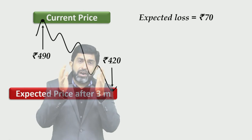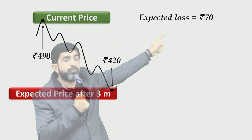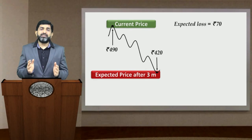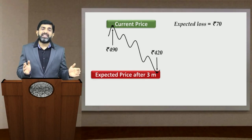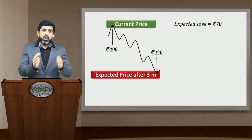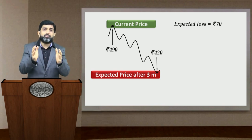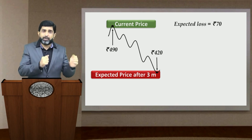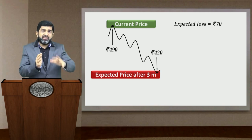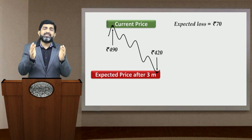The idea is to continue to hold the stock — not to sell it — and still knock off that expected loss of rupees 70. To do this through stock futures, let us go to the fundamental concept of pricing the futures contract. If the current market price of the stock is rupees 490, adjusting for the interest element, the futures price will be slightly higher — imagine it is rupees 500.